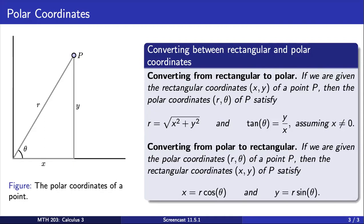On the other hand, to convert from polar to rectangular coordinates, we use the following two identities. x is going to be equal to r cos(θ), and y is going to be r sin(θ).